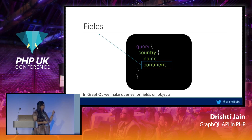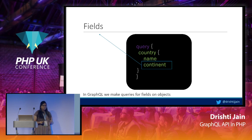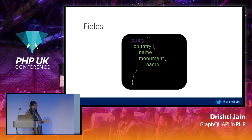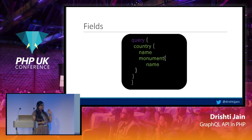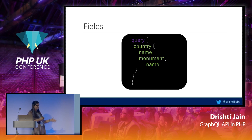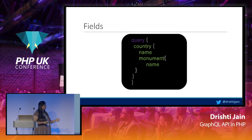Fields can be of scalar type or can have sub-fields. For example, 'monument' could have a 'name' as a sub-field — a non-scalar kind of field within the query. Having objects as fields avoids making multiple requests for related resources. In the general case you'd fetch the list of countries and then for every country fire another query to get its monuments. Instead, you can combine both in a single query, directly fetching related fields at the same time.